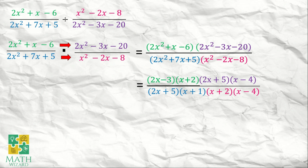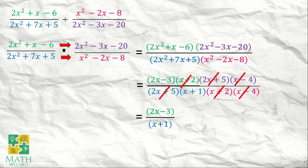We need to cancel the common factors between the numerator and the denominator. So we cancel x plus 2 and x plus 2, 2x plus 5 and 2x plus 5, and x minus 4 and x minus 4. Writing the remaining terms: from the numerator we have 2x minus 3, and from the denominator we have x plus 1. Therefore, the final answer is 2x minus 3 over the quantity of x plus 1.